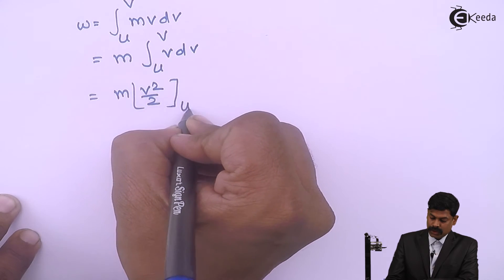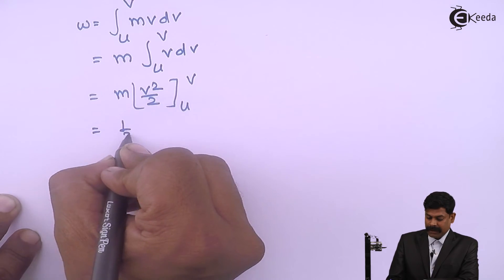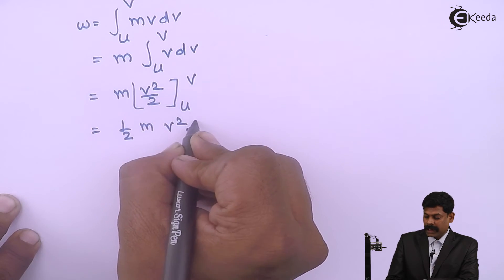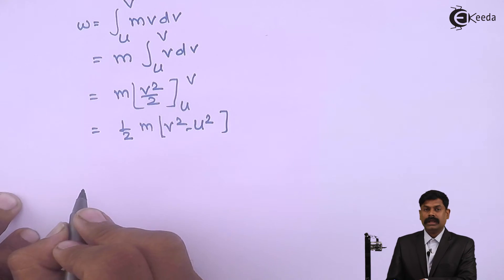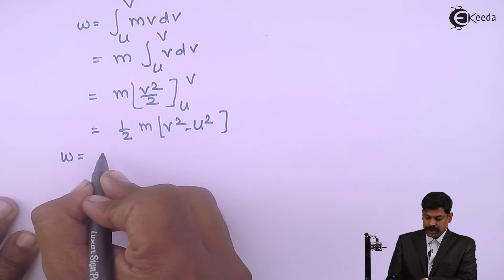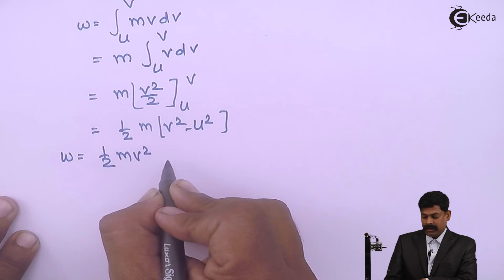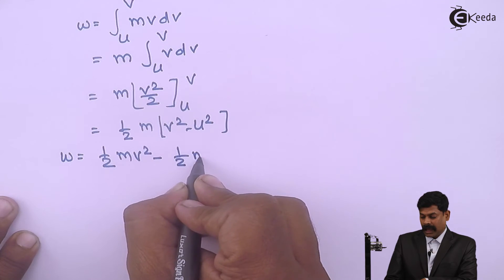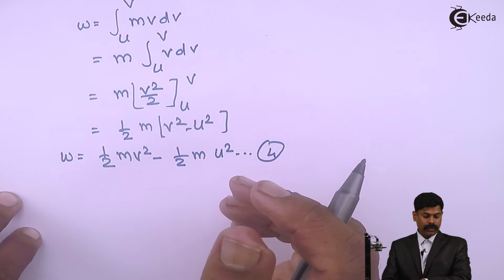Evaluating from u to v gives: W equals half times m times (v squared minus u squared), therefore total work done equals half mv squared minus half mu squared — equation 4.